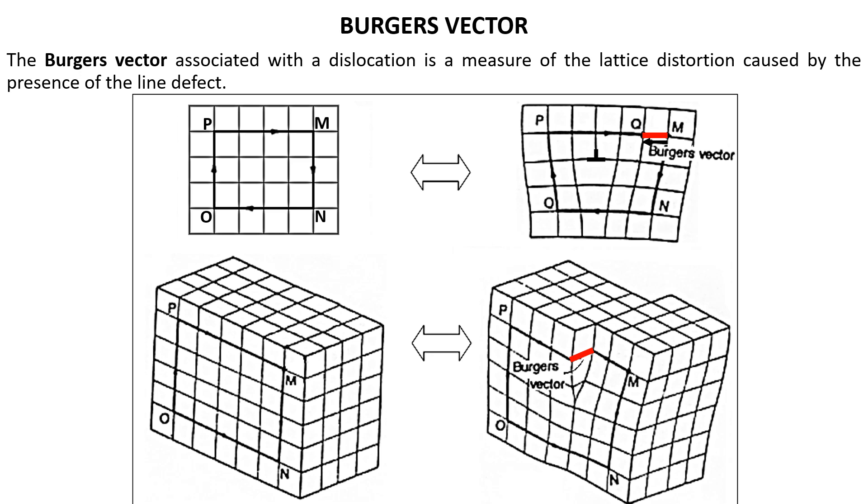This top left diagram is a perfect lattice diagram. This section shows the crystal lattice with no dislocation, and if you see this in a clockwise direction from P to M, from M point to N, from N to O, and O to P again, it makes a closed loop which is a Burgers circuit.